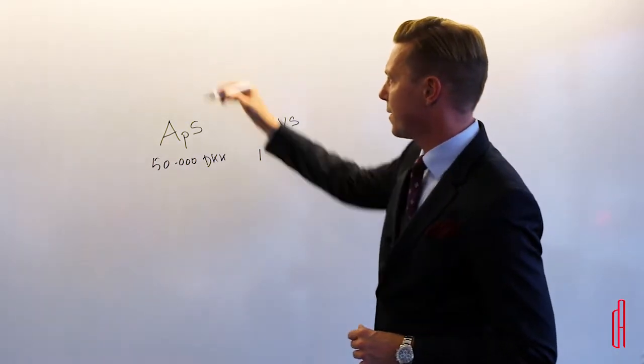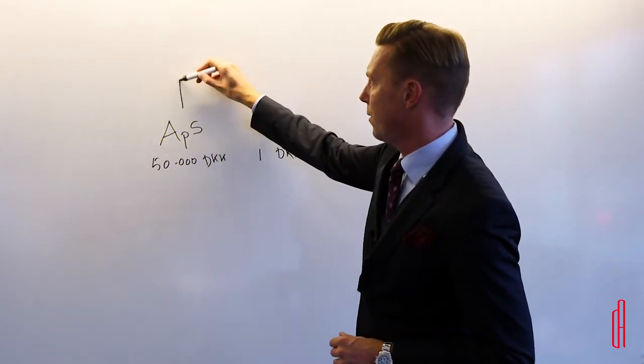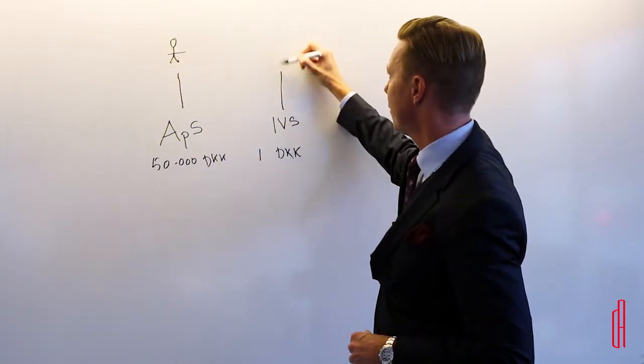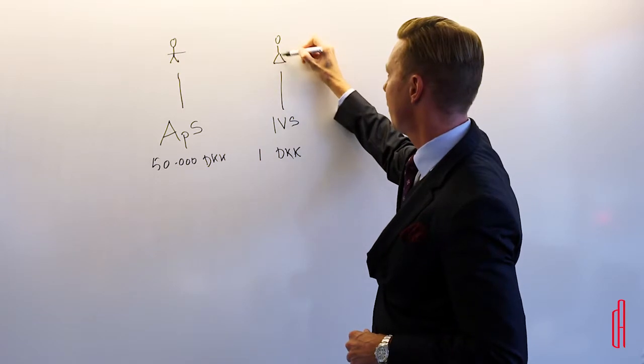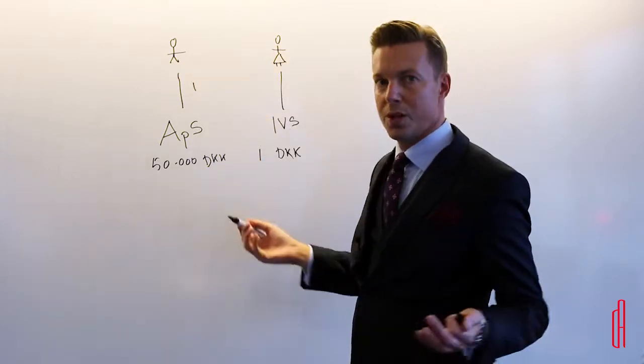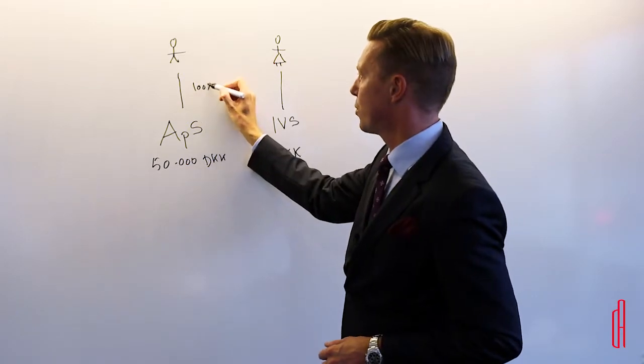So normally it works like this: these companies here are owned by a shareholder. We can take a man here and we can take a woman here, and normally they will own, if there's only one shareholder, naturally they will own 100% of the shares.